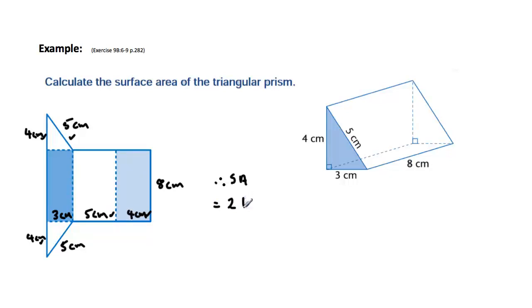It's equal to 2 triangles, and they're the same size, plus 3 rectangles. And they're different sizes as you can see.